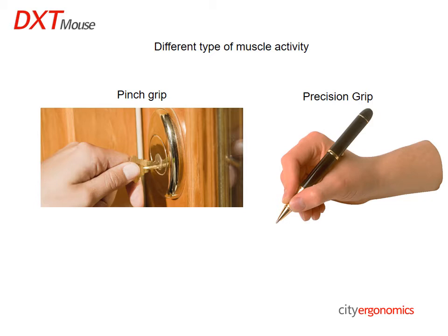The pinch grip utilises static muscle activity, when an object is grasped firmly in the hand without any movement of the muscles or object. The precision grip utilises dynamic muscle activity, when an object is held by the fingertips and moved, such as when manipulating a pen.